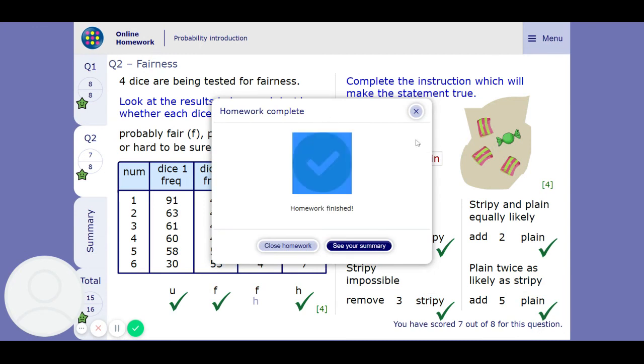Oh, actually, they disagreed with this one. They said it's hard to tell. I gave them the benefit of the doubt, but we talked about that. How when there's not many dice being rolled, we can't really be sure. Okay, so hopefully you can get a good score on this now. I've got to start going. Bye.